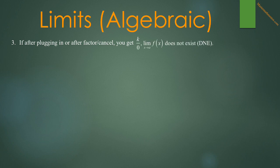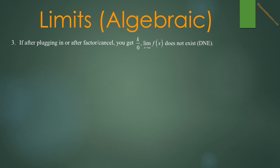In finding the limit of f of x as x approaches a, after plugging in or factoring and canceling, if you get some constant over 0, we say the limit does not exist. However, it is possible to get more information to determine whether the limit is infinity or negative infinity. The next problem will show the technique.